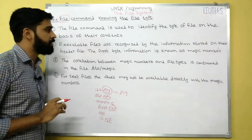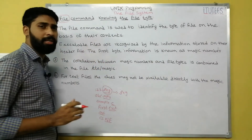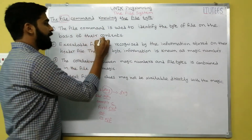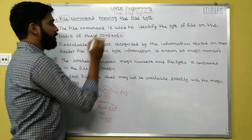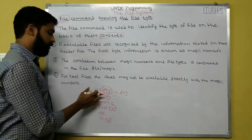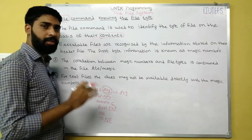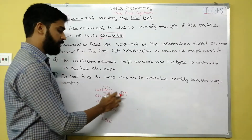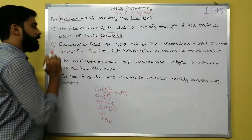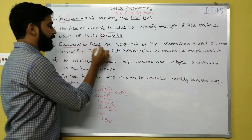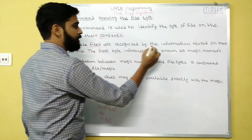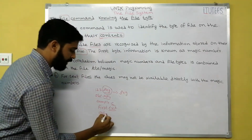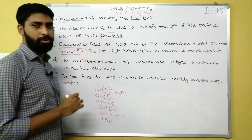Unix identifies the type of the file based on its content. The file command is used to identify the type of file on the basis of content, not on the basis of extension. If I name a file '123.jpeg' but write text inside it, it will be displayed as an ASCII file, not a JPEG file. All executable files are recognized by the information stored in their header.